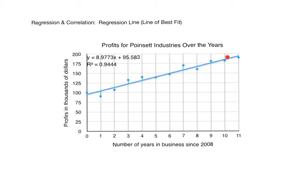Again, we are not going to compute the features of this line by hand. We're going to use Excel to not only plot the line on our scatter plot but to also give us the equation of the line. And as you can see here, I've already done that. The equation of our line is y equals 8.9773x plus 95.583. This is the equation of our line of best fit. We now want to be able to use it to make predictions about the future for Points at Industries.